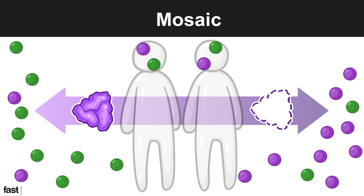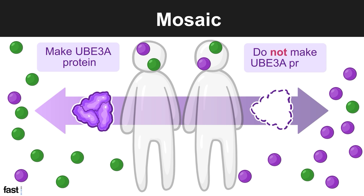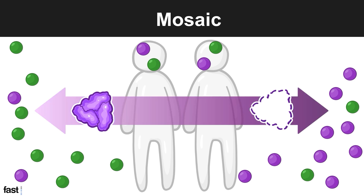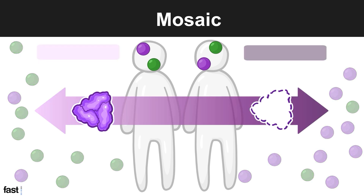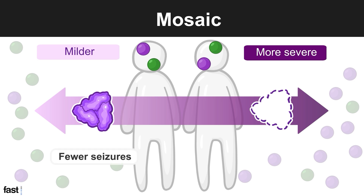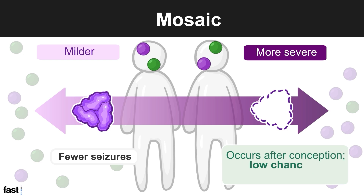Individuals living with mosaic AS may have different degrees of mosaicism. In some individuals, the majority of cells may make UBE3A protein, while in others, the majority of cells do not make UBE3A protein. Individuals who make some UBE3A protein are likely to have milder symptoms, such as fewer seizures, than those who do not make any protein. Mosaicism often occurs after conception, is not typically inherited, and the chance of it occurring in future pregnancies is usually low.